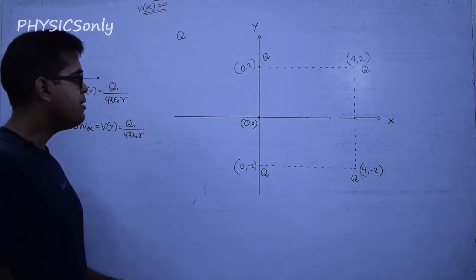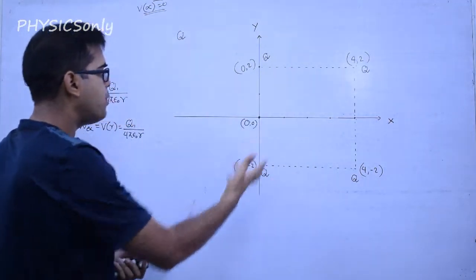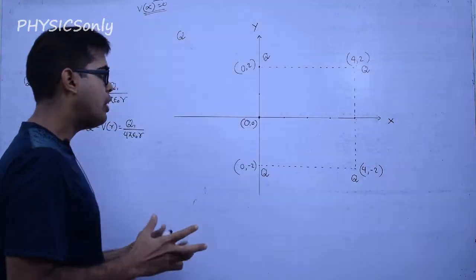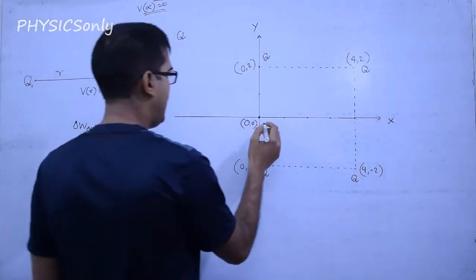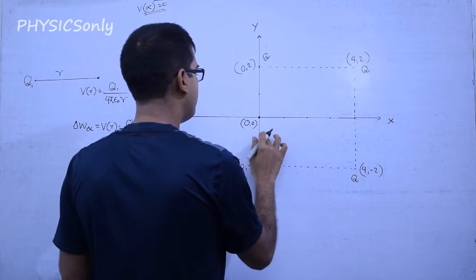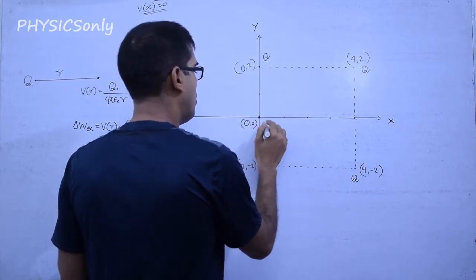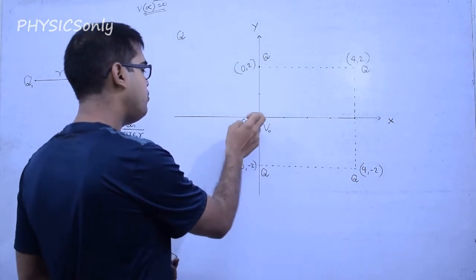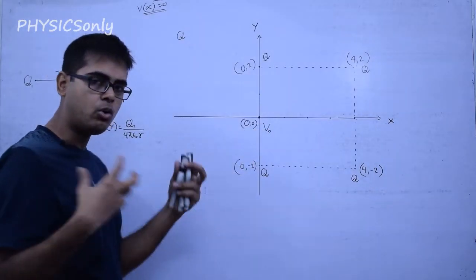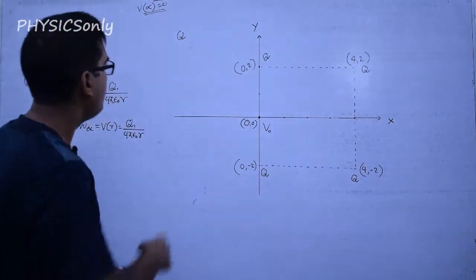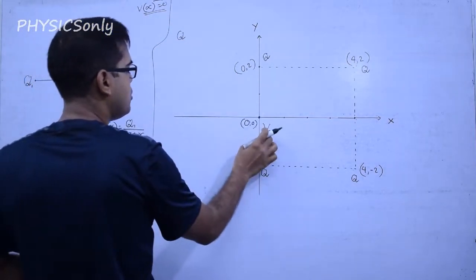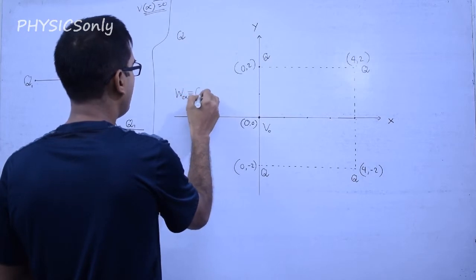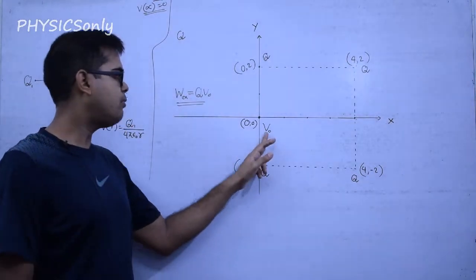Now let us come to our current problem. We have to calculate the work done to bring a charge Q to the origin. First we calculate the potential at the origin — call it V₀. Since V₀ is the work done to bring a unit positive charge from infinity to the origin, the work done to bring charge Q to the origin will be W_external = Q × V₀.